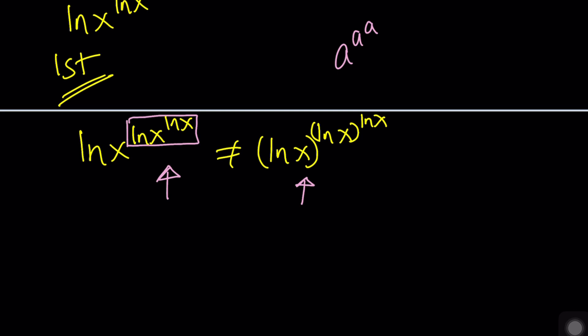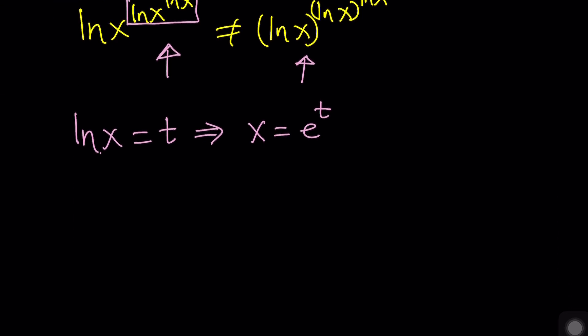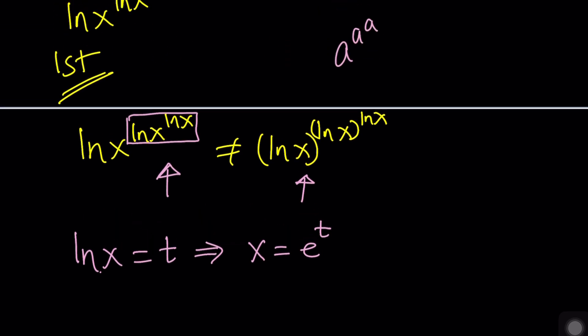Suppose ln(x) equals t, and you can use any variable you want, but t is one of my favorite variables, and also one of my favorite drinks, especially black tea. I sometimes drink herbal teas as well if I'm too tired and I want to sleep. Anyways, so if ln(x) is equal to t, you know that ln is the natural log, hopefully, right? From here, the base is e, so we can write this as x equals e to the power t.